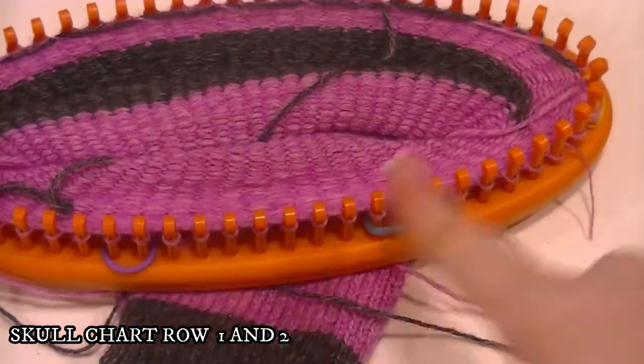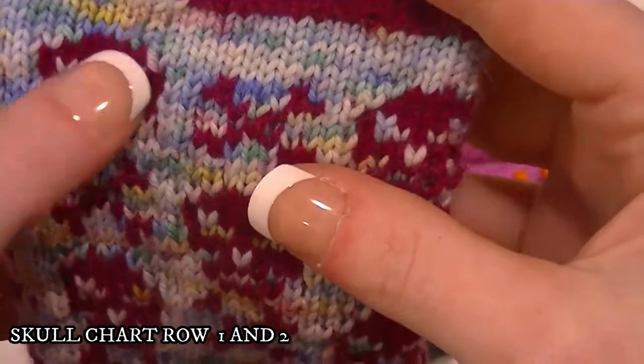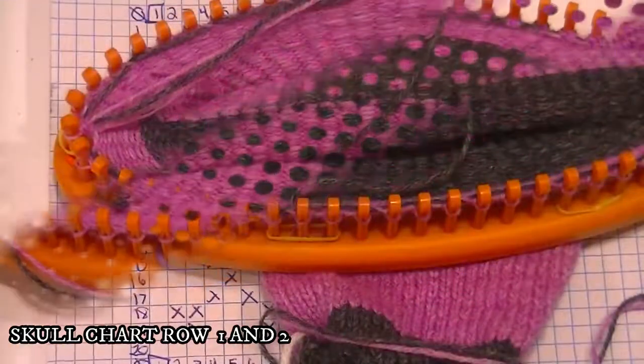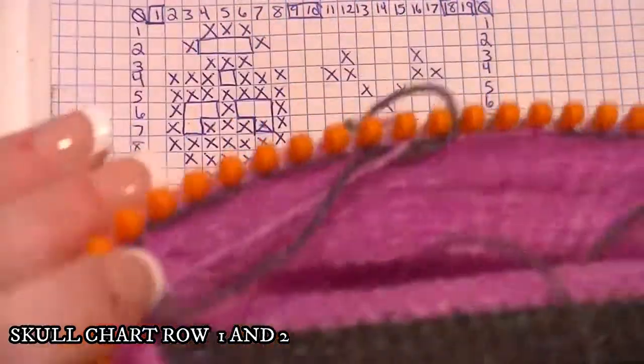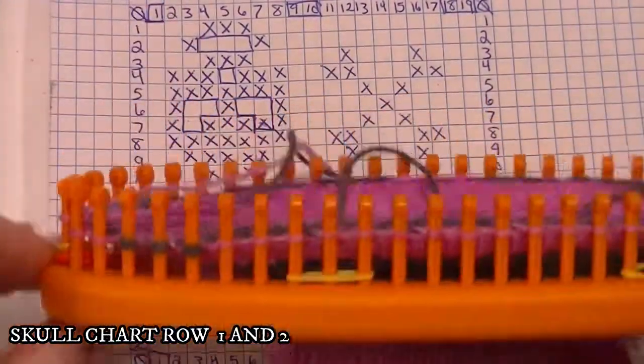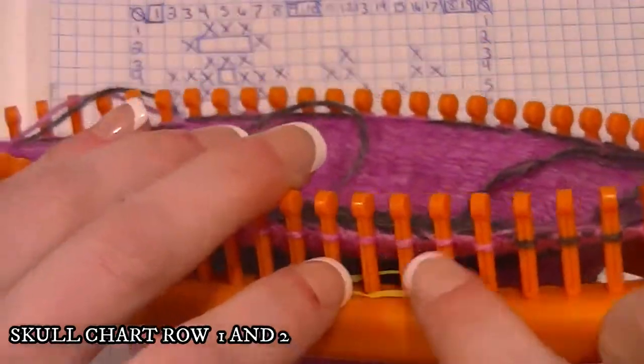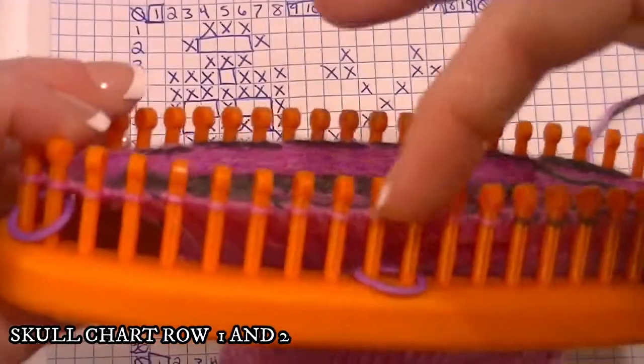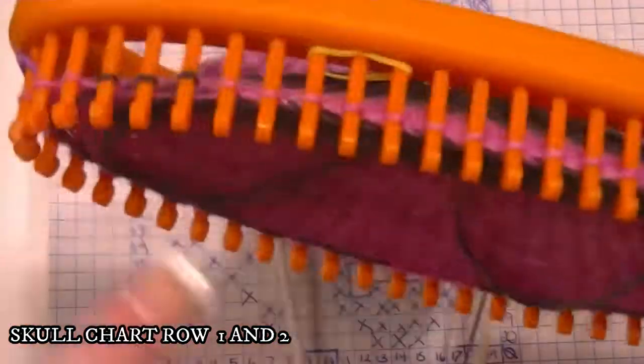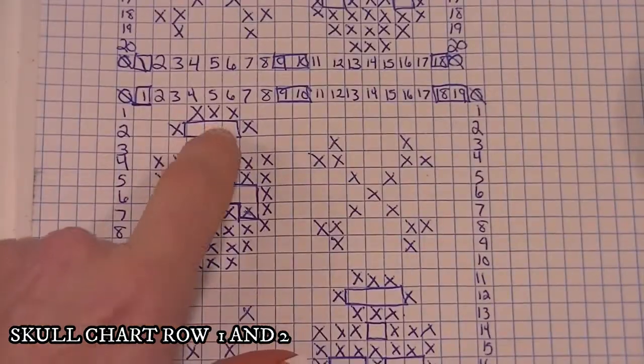I would keep doing that until I got back to my first peg, which I've got marked. Row one of the skull chart is complete. Let me give you an idea of what it should look like: you should have three, then this spot's empty - 1, 2, 3 - then three grays, then this spot empty, and again three, then empty. You should have three sets of the very bottom part of your skull.